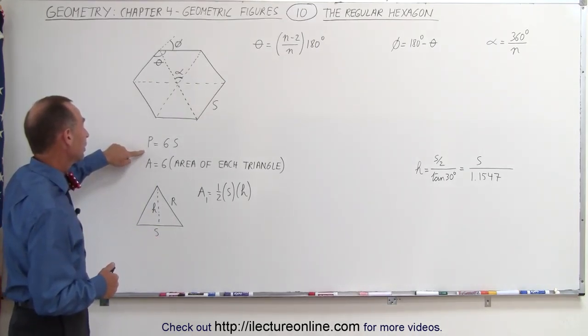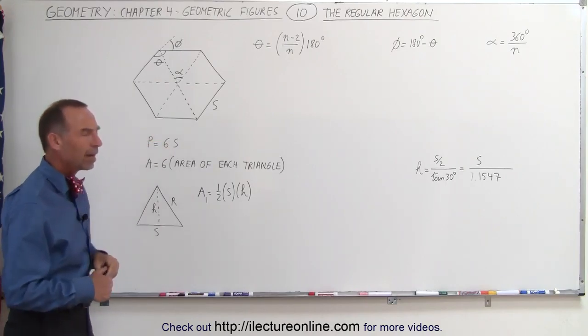Therefore, to find the perimeter, it's simply six times the side. But how to find the area?